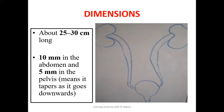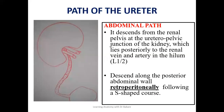In the abdomen, the ureter runs behind the renal vessels — the renal artery and the renal vein — and that is how it exits the kidney. The ureter runs behind the renal artery and the renal vein, and descends along the posterior abdominal wall, running retroperitoneally.